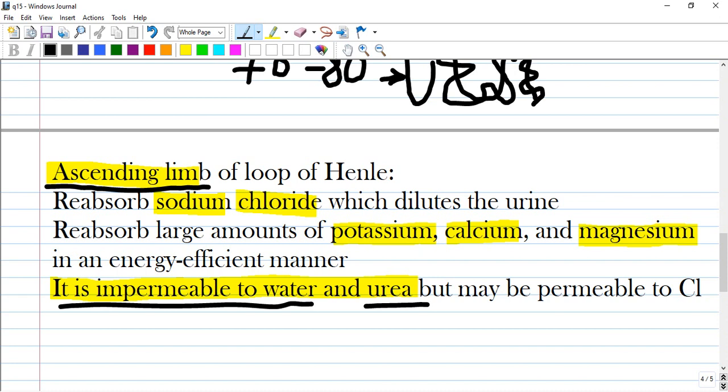Urea is an important component that can pass through many tissues and does not require a gradient, especially if it is in high concentration.